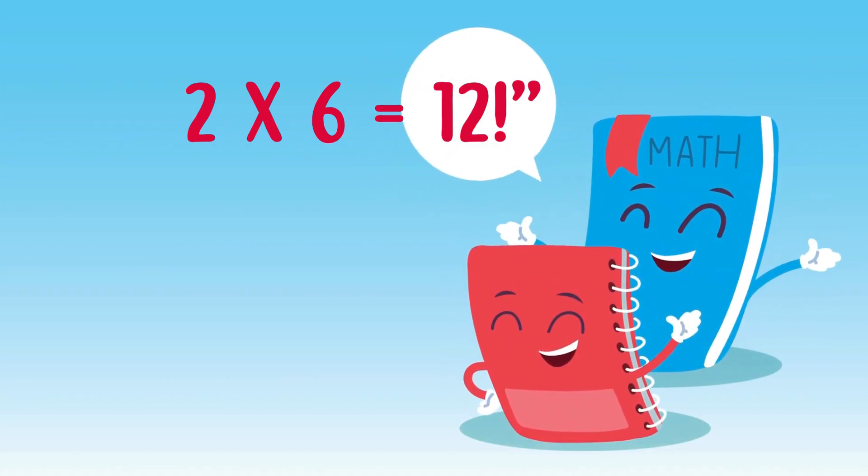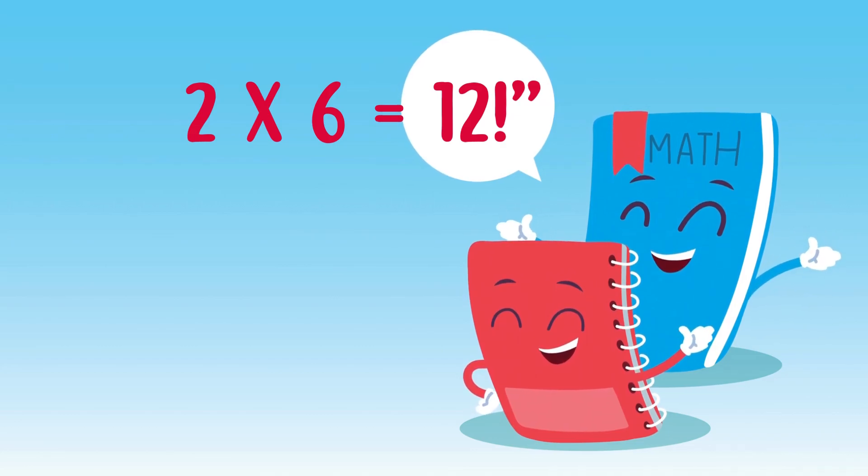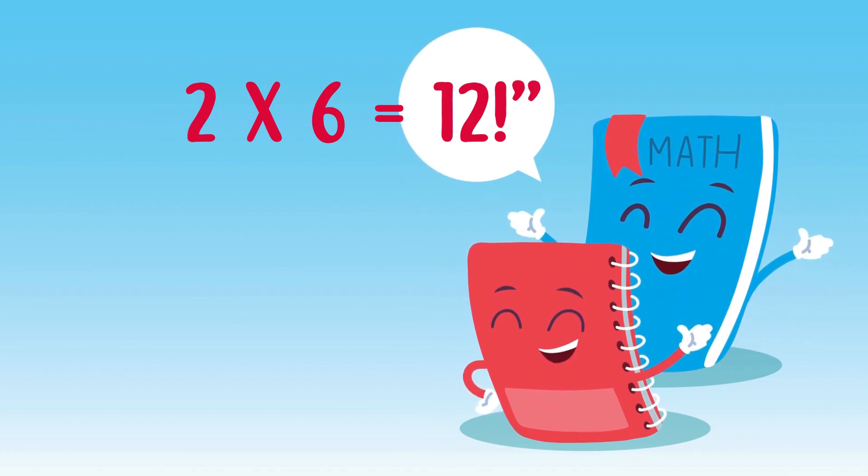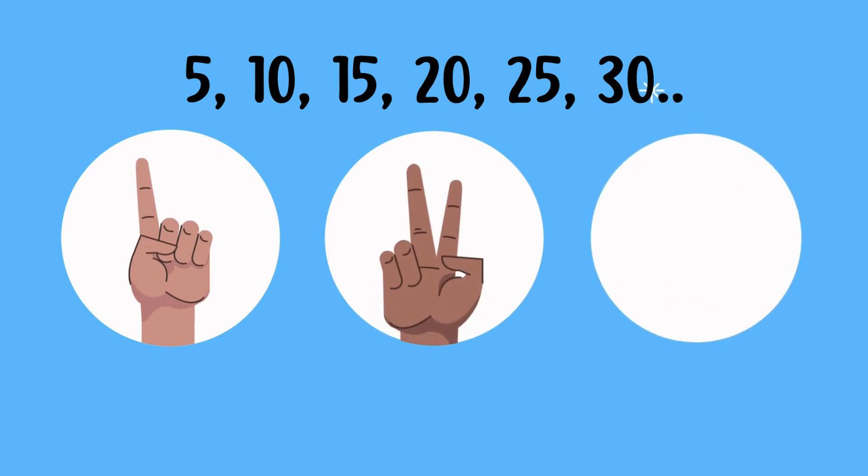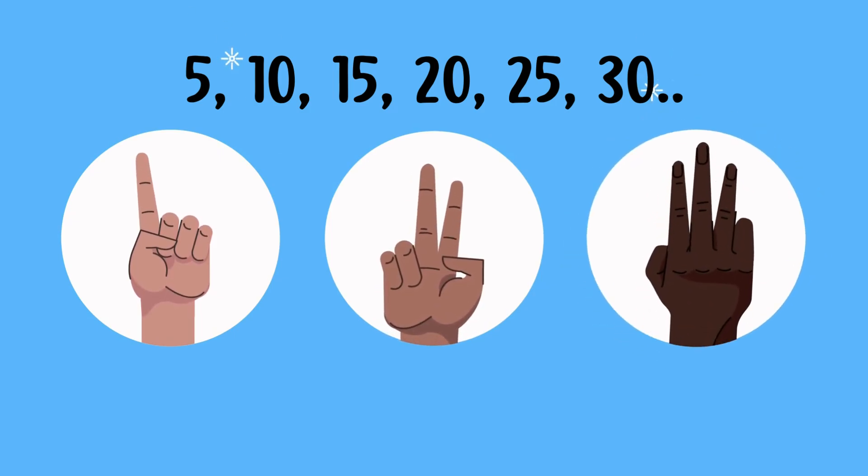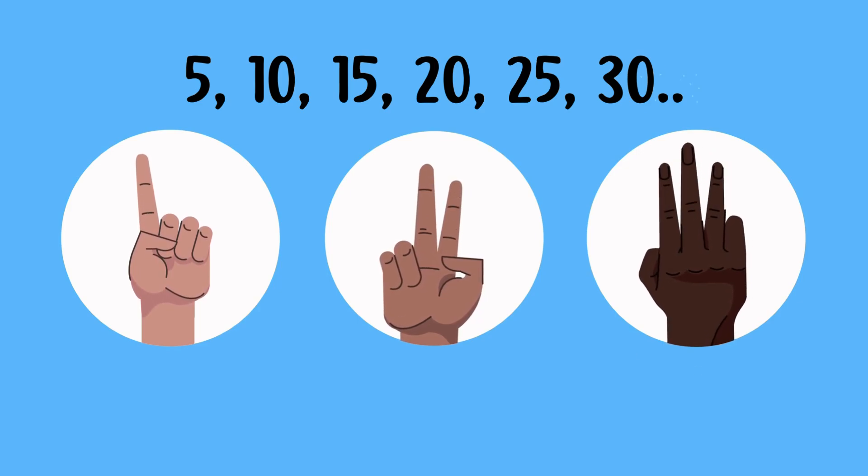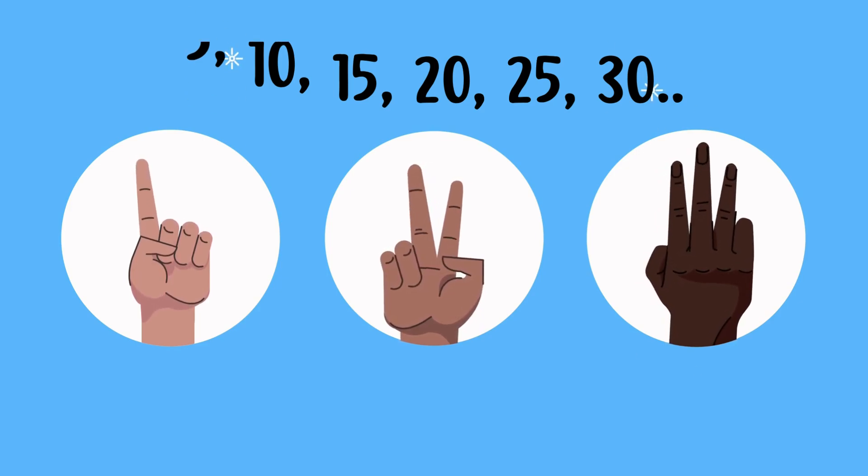Two times six equals twelve. And remember, skip counting is just fast adding. You can try it with fives. Five, ten, fifteen, twenty, twenty-five, and so on.